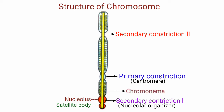Each chromatid in turn contains a long, unbranched, slender, highly coiled DNA thread called chromonema. In plural, it is called chromonemata. It extends through the length of the chromatid.